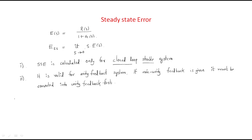When discussing steady-state error, we concentrate on two points: first, it depends on the system type, and second, it depends on the system input. We will discuss each one. First, we will discuss different types of inputs and how steady-state error depends on them.